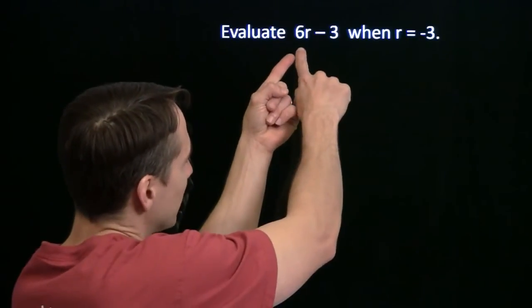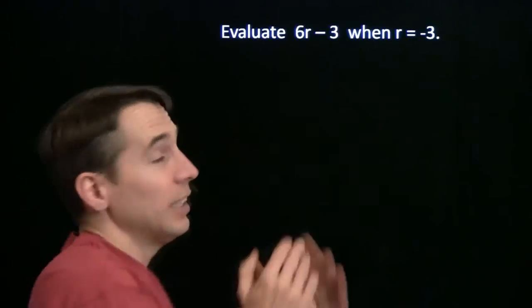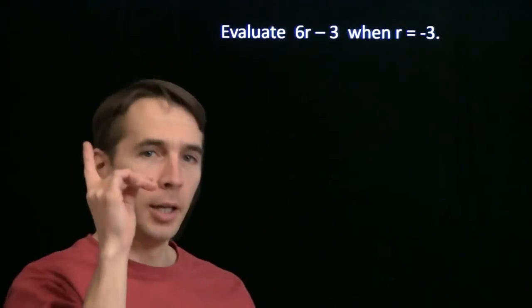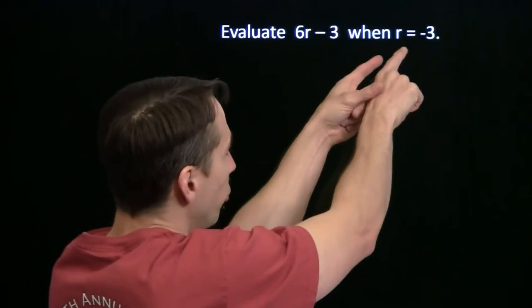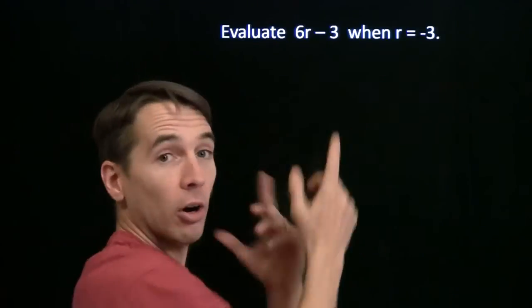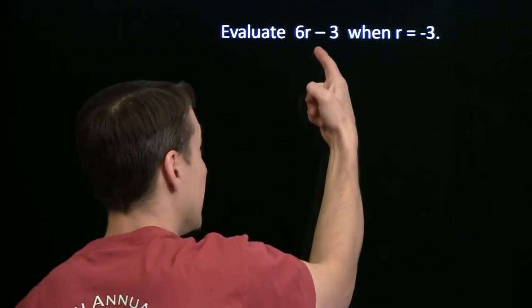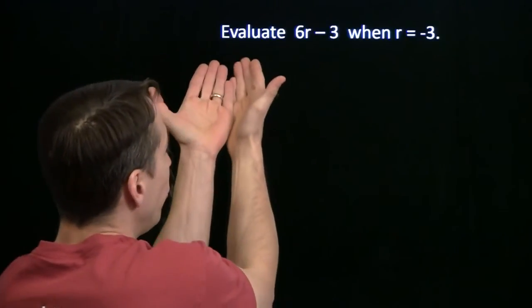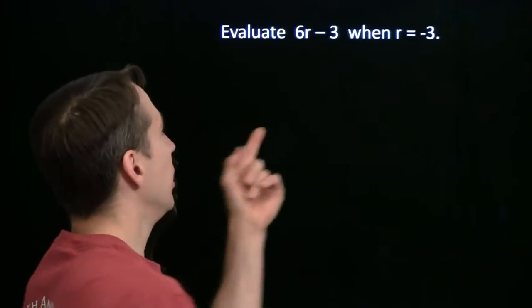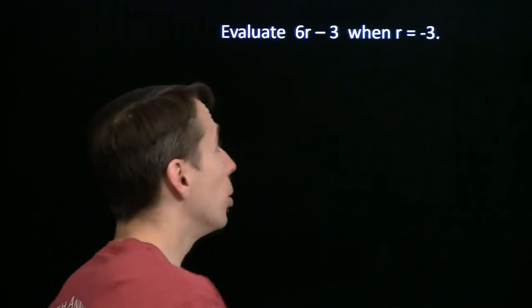When we have an expression like 6r minus 3, that expression can equal lots of different things until we choose a value for the variable. Once we choose a value for the variable, like r equals negative 3, then we can figure out exactly what number this expression equals. That's what we're told to do when we're told to evaluate the expression for a specific value of the variable.